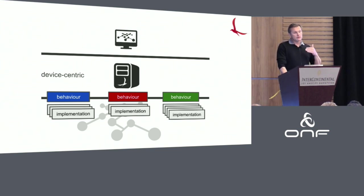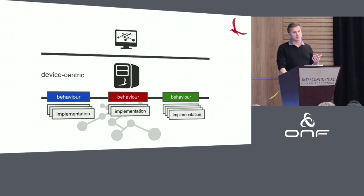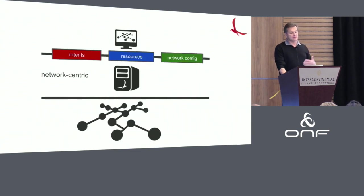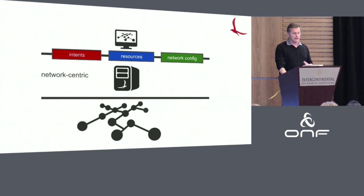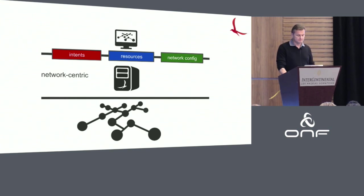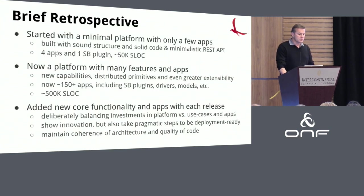The APIs at the north also allow applications to introspect the environment through device-centric abstractions, but they also offer high-level composite abstractions — network-centric ones such as intents, the ability to reserve resources, and the ability to configure the network across many different devices. In general this tends to make applications more portable and more efficient.